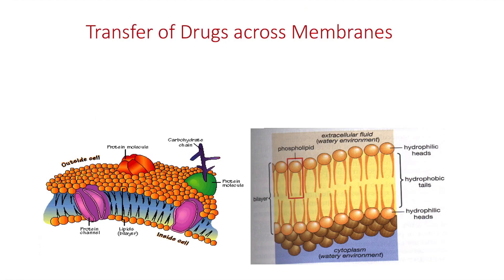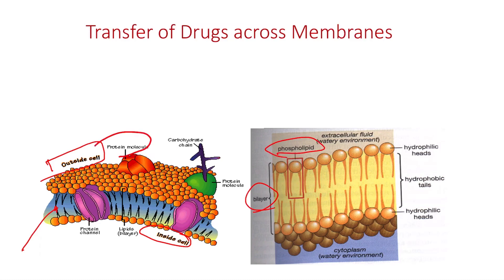Now we need to understand how drugs move inside the body through cells. We know the structure of the cell membrane. The outside and inside of a cell are separated by a cell wall made of lipid bilayers, also known as phospholipids. Deep proteins and phospholipids are all covered under these cell layers. Because membranes are lipid-made, lipid-soluble drugs can easily pass through that membrane.